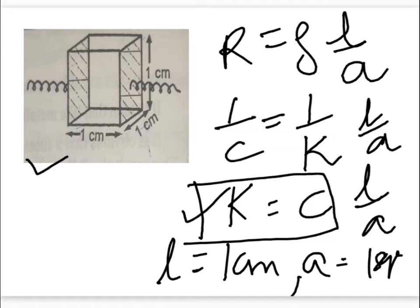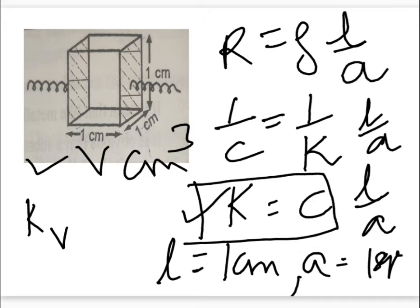If the volume of the solution whose conductance you need to find out is V centimetre cube, then the specific conductivity of such a solution at that dilution can be represented as KV or Kappa V. So in terms of volume, Kappa V is the specific conductivity at a particular dilution V. Similarly, at a particular concentration C, the specific conductivity can be represented as Kappa C.